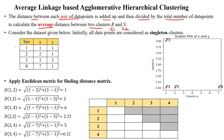The dataset is given with four data points. Initially, all the data points are considered as a singleton cluster — that means each cluster has only a single data point. Then we will apply the Euclidean metric to calculate the distance matrix.